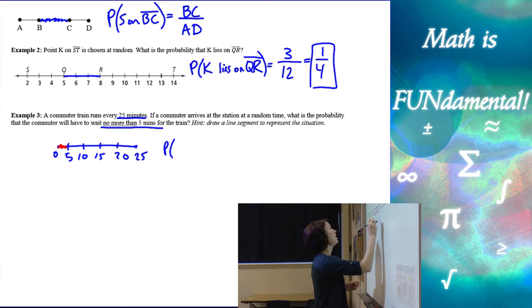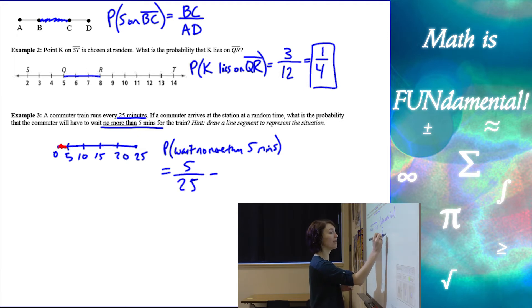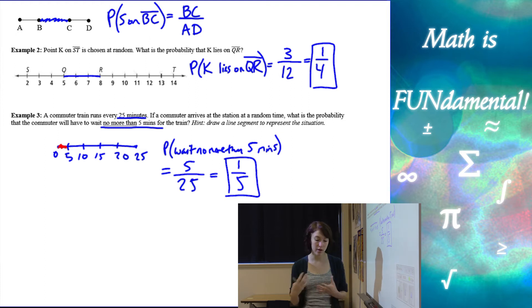So probability of waiting no more than 5 minutes is going to be equal to the length of that time which is 5 minutes out of the total length 25 or 1 fifth. So a lot of these problems are going to be pretty simple and quick.